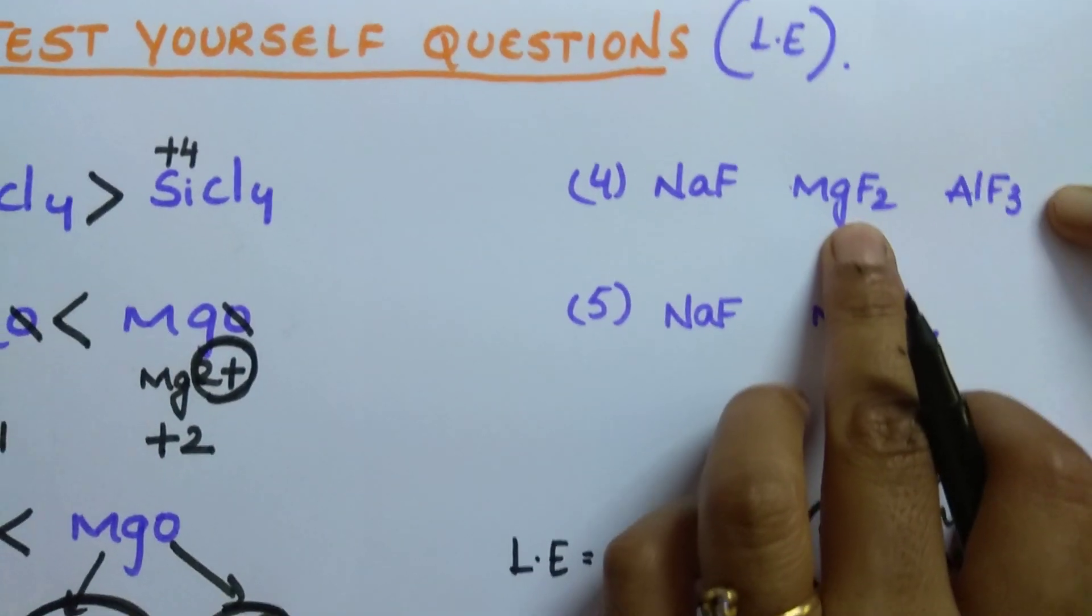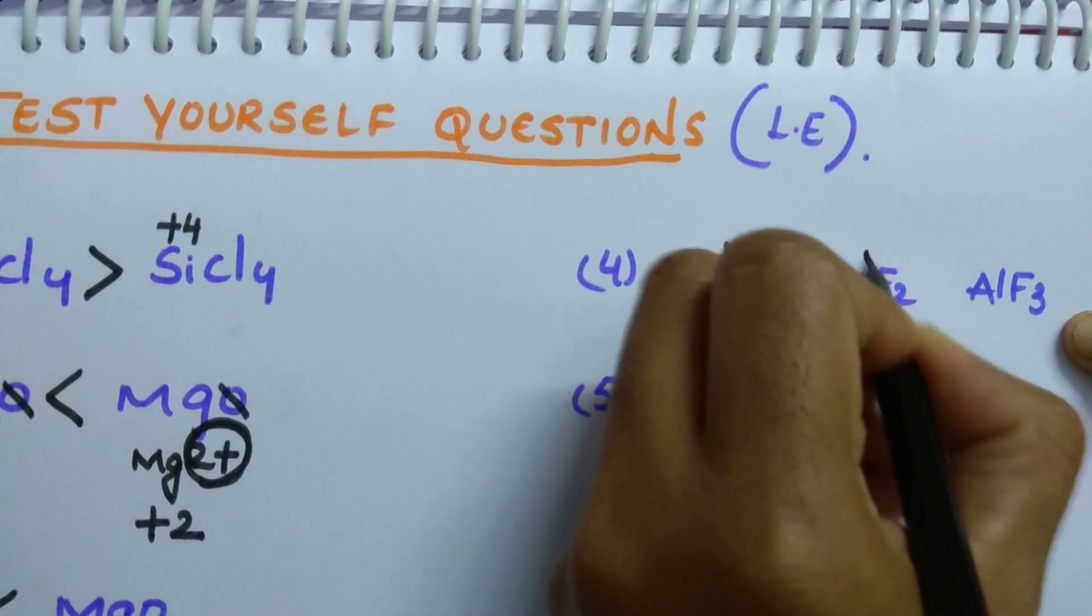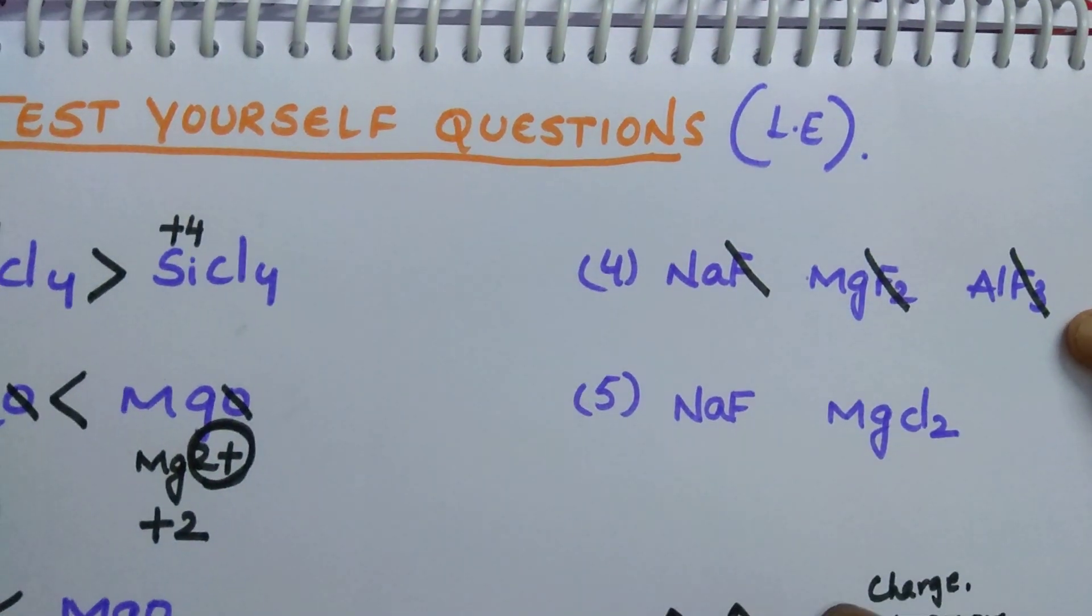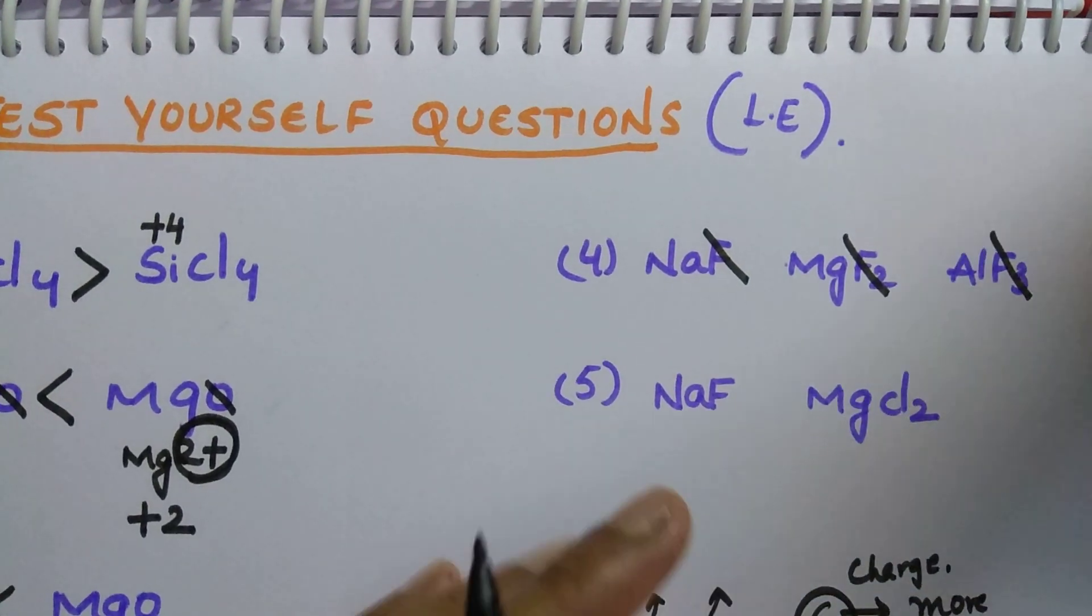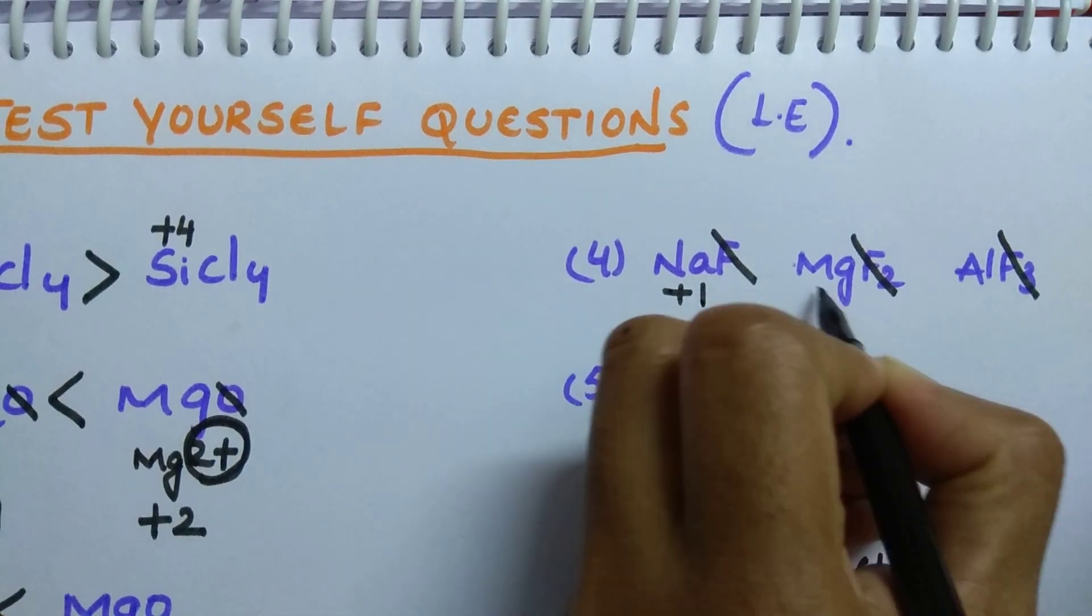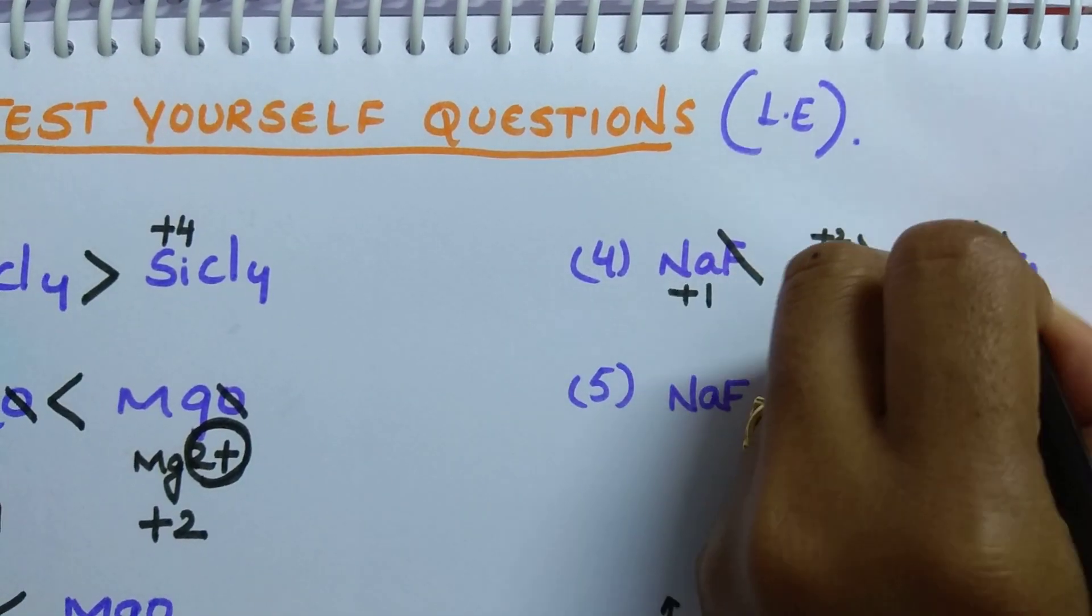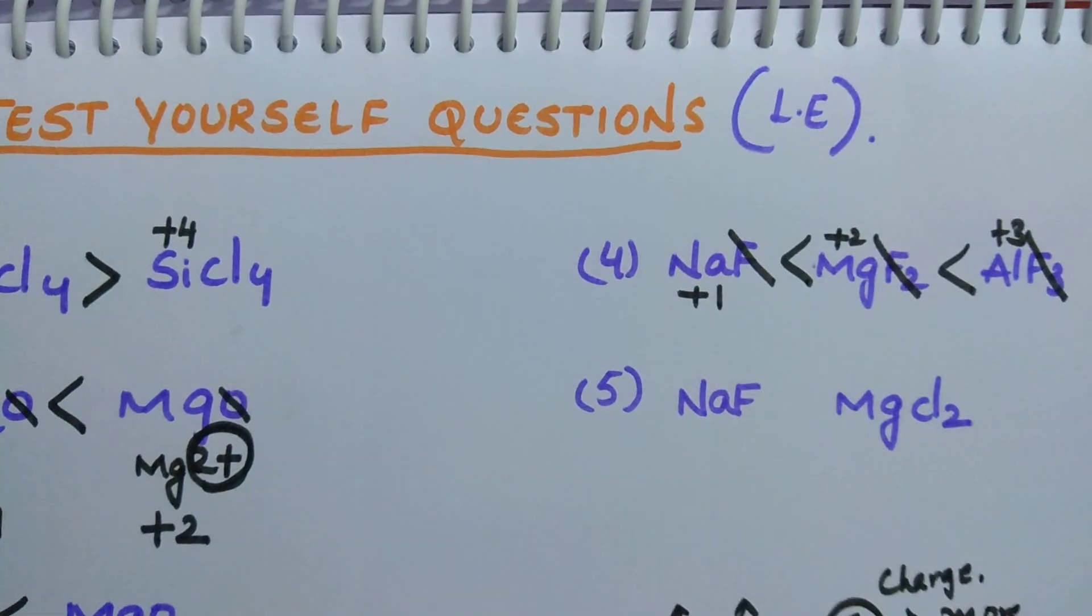Next one, NaF, MgF2, AlF3. In this three, anion part is same. So do not see that. Just I'm crossing that. You also do like this in exam. Then you will not get any confusion. Na, it is in plus 1 state. Magnesium, it is in plus 2 state. It is in plus 3. Which is having more charge? Aluminium. So it is having more lattice energy.